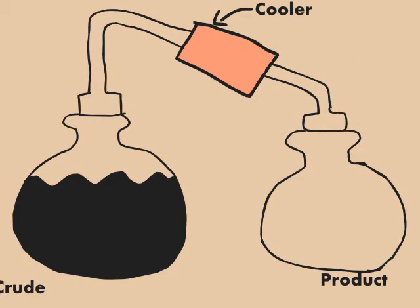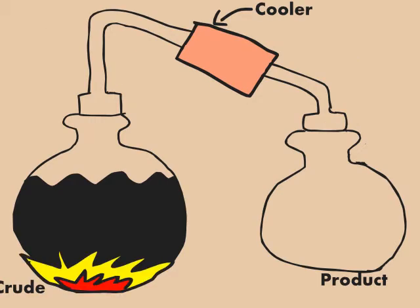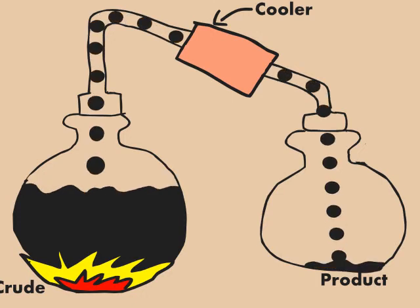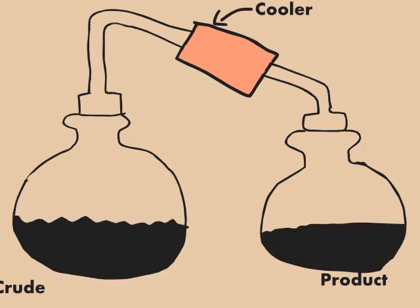Distillation takes advantage of this property of molecules. When crude is heated, the lighter molecules in the mixture evaporate first. If these vapors are allowed to rise and then cool in a separate vessel from the crude mixture, the crude can be separated into its different components.